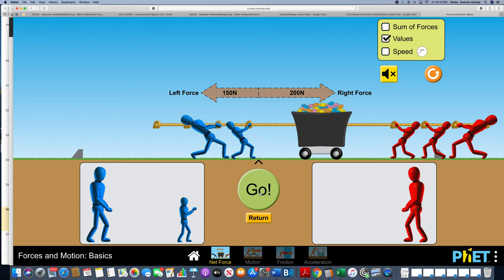As you can see, our tug-of-war line moves towards the right because there is a greater amount of force pulling towards the right. This is an example of an unbalanced force. There is a greater amount of force pulling to the right than there is pulling to the left.